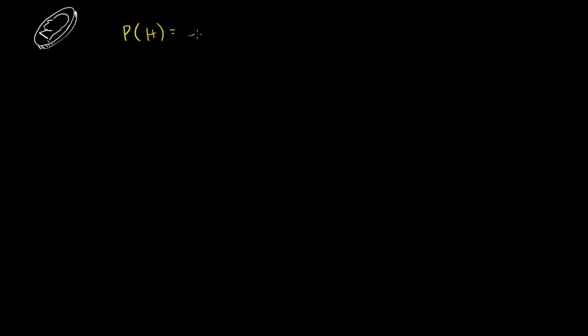Let's think about a situation where we have a completely fair coin. I'll assume it's a quarter. So it's a fair coin, and we're going to flip it a bunch of times and figure out the different probabilities. Let's start with a straightforward one — let's just flip it once. With one flip of the coin, what's the probability of getting heads? Well, there are two equally likely possibilities, and the one with heads is one of those two. So there's a 1/2 chance.